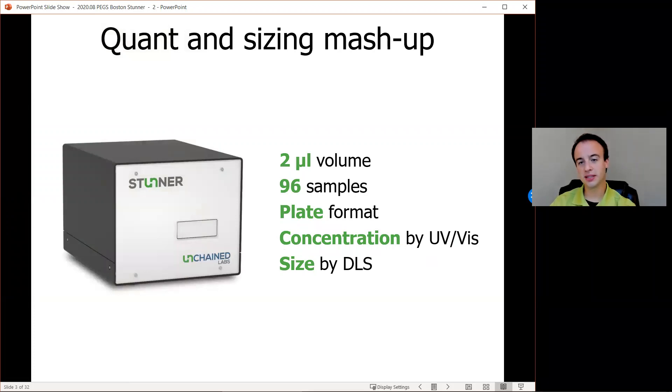Stunner combines two different technologies in one instrument for the first time to enable answers on quantification and aggregation all at once. Two microliters of sample gets you the concentration of your protein while making sure that you're measuring monodispersed proteins, not a bunch of aggregates.